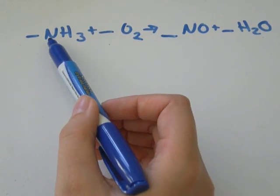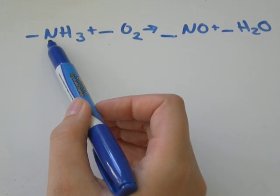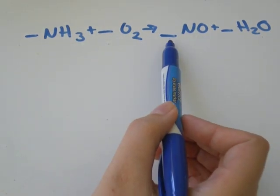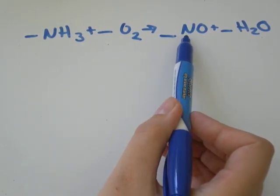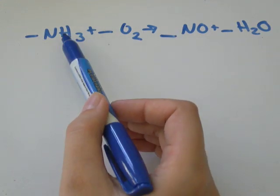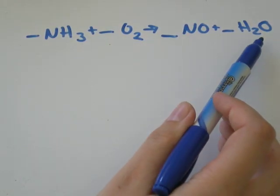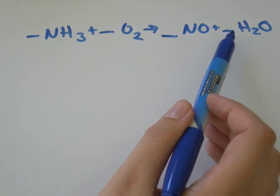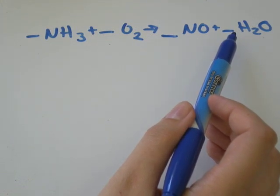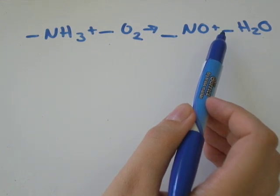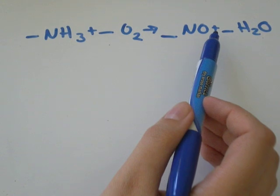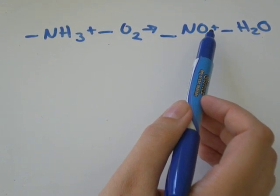So I need to have whatever number of nitrogen atoms I have on the left side of my equation, I need to have the same number of nitrogen atoms on the right side of my equation. The same for my hydrogen atoms and my oxygen atoms. So you should always try to do everything other than the hydrogen and the oxygen atoms first, because usually it's easier to simplify hydrogen and oxygen.